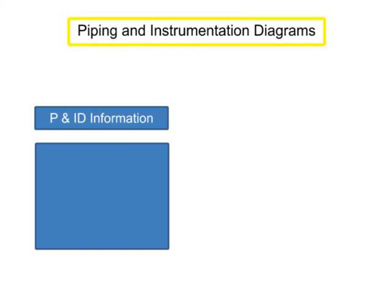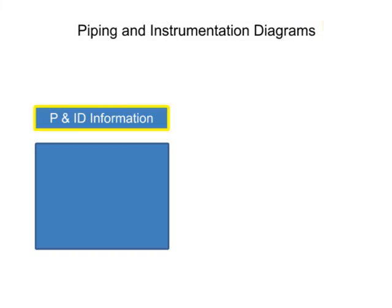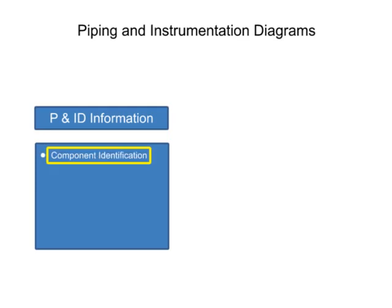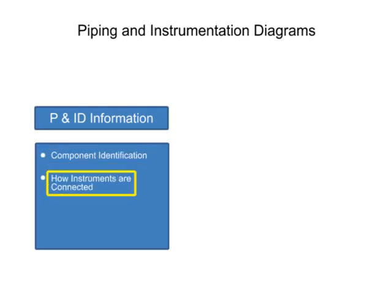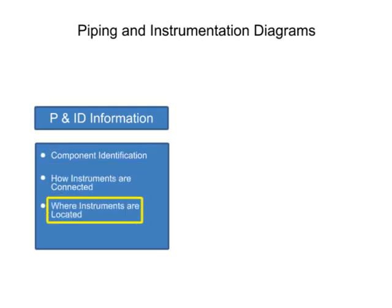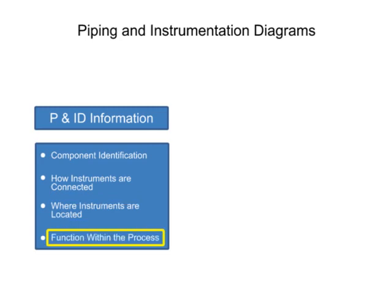Piping and instrumentation diagrams provide information that includes component identification, how instruments are connected, where instruments are located, and their function within a process.